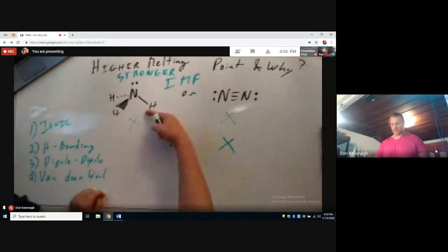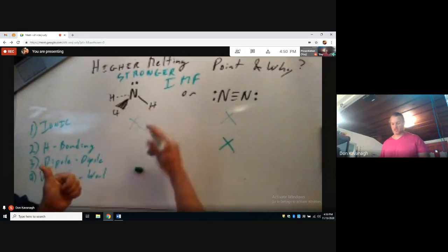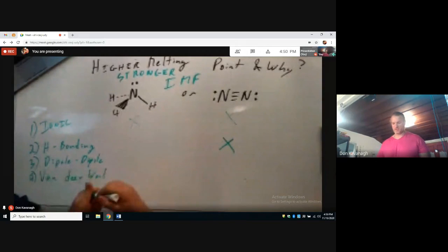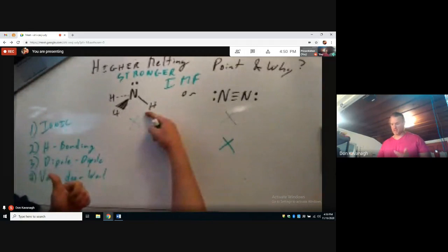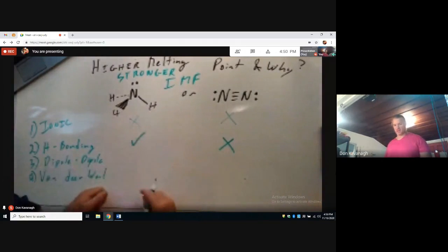This molecule here, ammonia, it has a hydrogen present. Check. Its hydrogen is bound to a nitrogen, oxygen, or a fluorine. Check. It has a lone pair. Check. Check. So, because it has checks on all three, it can participate in hydrogen bonding.